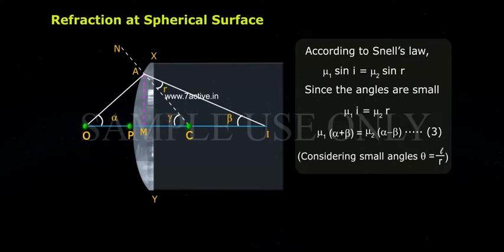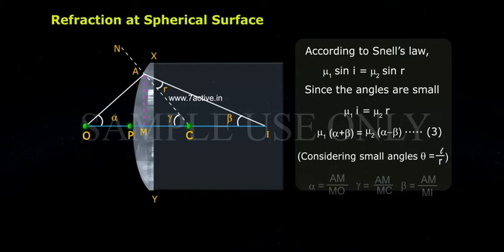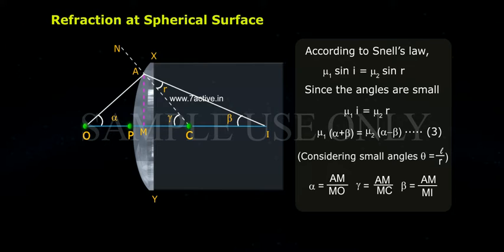Considering small angles, Theta equals arc length divided by radius. Therefore, Alpha equals AM divided by MO, Gamma equals AM divided by MC, and Beta equals AM divided by MI.